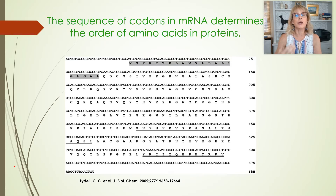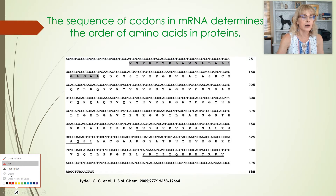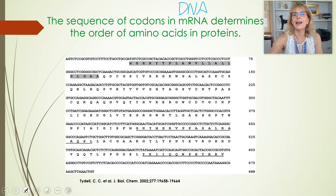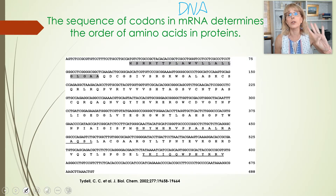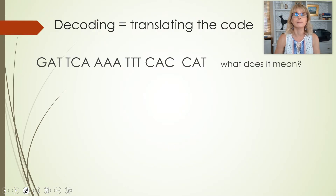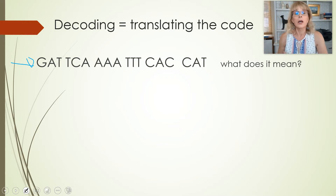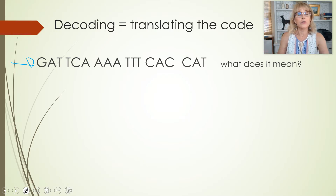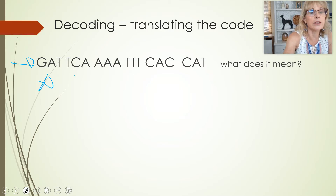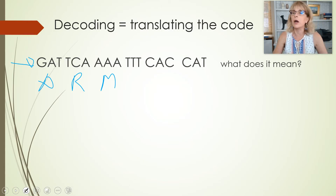The information is in code, and the reason it has to be in code is because there are only four different bases, but 20 amino acids. So decoding is translating the code. You could take that DNA, go to a little decoding chart, and find that this sequence is this amino acid, this one's that amino acid — because we know the genetic code.